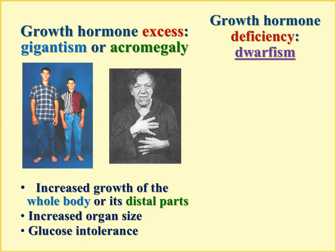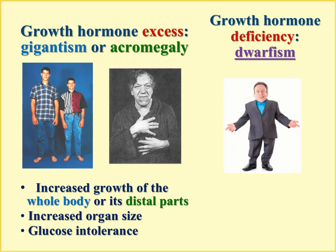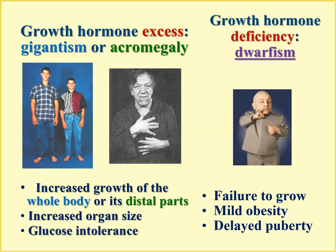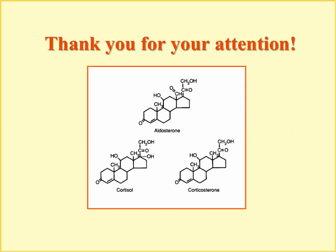The opposite case — deficiency of growth hormone — also depends on when it develops. In adults it will not reduce height, but problems with protein synthesis occur. Most well-known is the problem appearing early in young age, which results in insufficient growth — so-called dwarfism. These people have very short height, mild obesity (because growth hormone normally suppresses fat tissue formation), and delayed puberty. The next lecture will be about the most important hormones of peripheral endocrine glands.